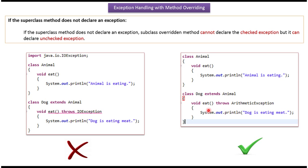But the subclass overridden method can throw an unchecked exception. So in this case, it throws ArithmeticException. ArithmeticException is a runtime exception, or unchecked exception. So this is allowed.